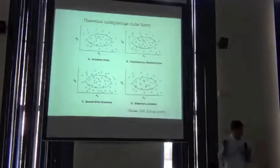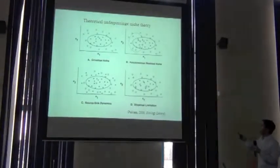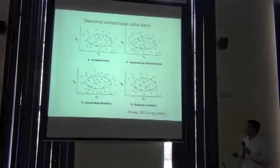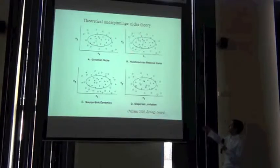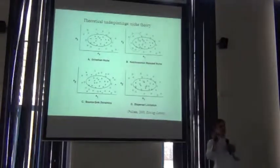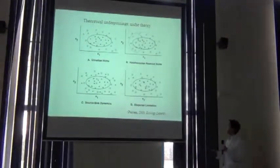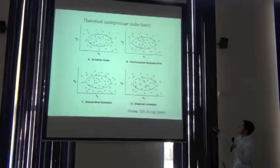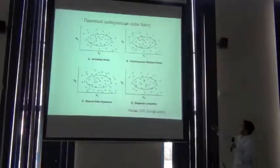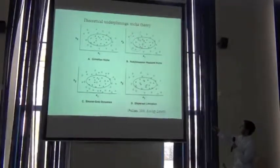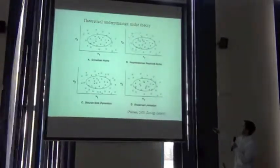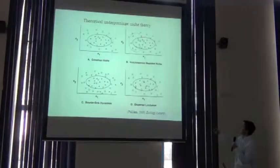A Hutchinsonian niche, going back to the work of Hutchinson, formalized the Grinnellian niche as a fundamental niche. But he added to that: species don't just respond to the abiotic environment — contrasting abiotic (the physical environment) with biotic (the biological environment) — species respond to other species as well. In this case, our species of interest, represented by the crosses, is being out-competed in part of its range by another species, represented by the dotted oval.